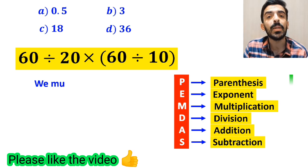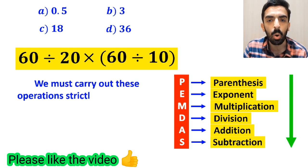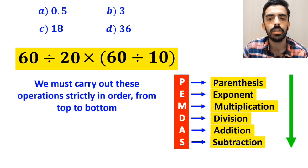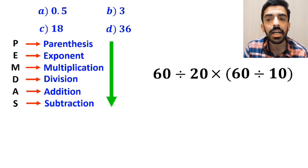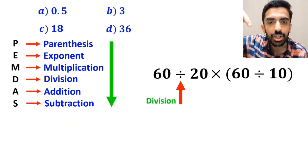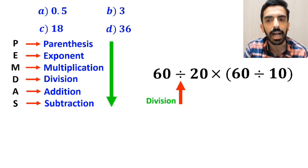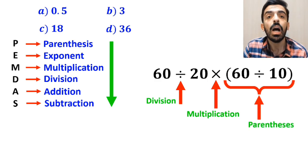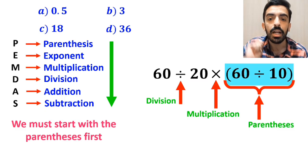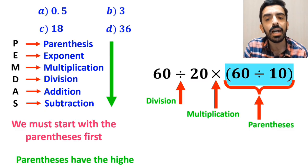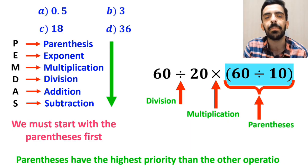We must carry out these operations strictly in order from top to bottom. As you can see on the screen, in this expression first we have a division sign, then a multiplication sign, and finally parenthesis. According to the PEMDAS rule, we must start with the parenthesis first because parenthesis have the highest priority compared to the other operations.